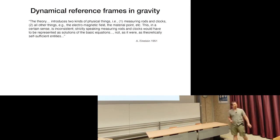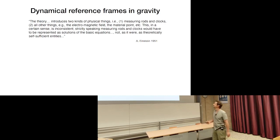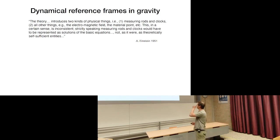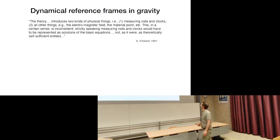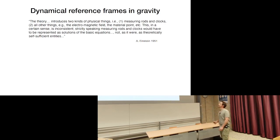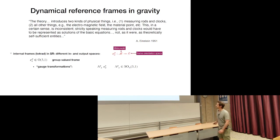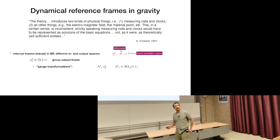Here is a quote of Einstein that fits well. General relativity introduces two kinds of physical things: measuring rods and clocks — the reference frames — and then all other things like fields. This is, in a certain sense, inconsistent. Strictly speaking, measuring rods and clocks would have to be represented as solutions of the basic equations. That's what we're heading toward: a realization of this idea. To get inspiration, let's quickly look at special relativity with internal frames — tetrads.